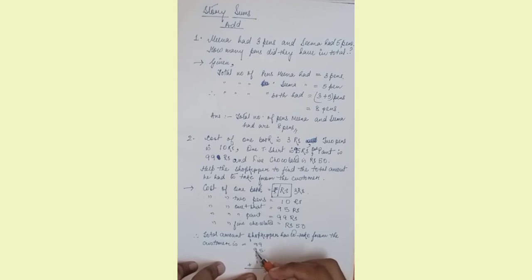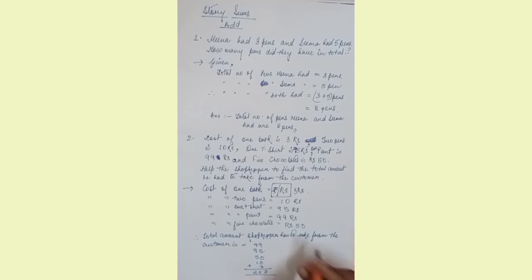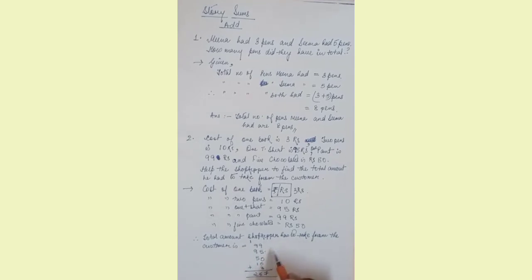1 plus 9 is 10, 10 plus 9 is 19, 19 plus 1 is 20 for easy calculation. 20 plus 5 is 25. So 257, it's better if you do like this.